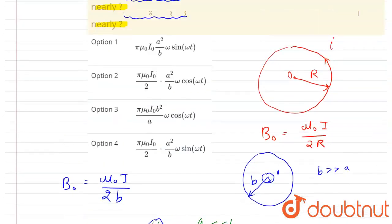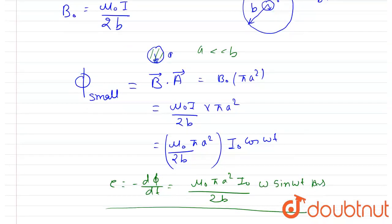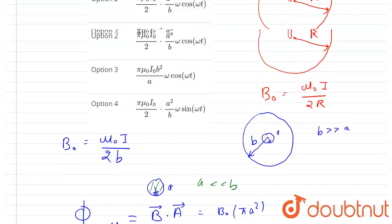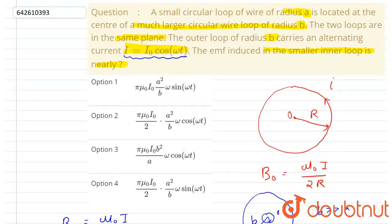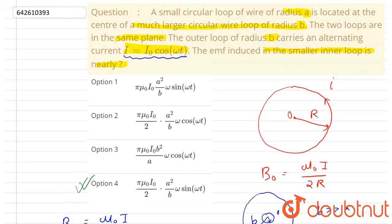Now you can see the question again, this was our question. And we calculated that this rate and this is equals to mu naught pi a square by 2b i naught omega sin omega t. So the answer here will be test 4. Simple. Thank you.